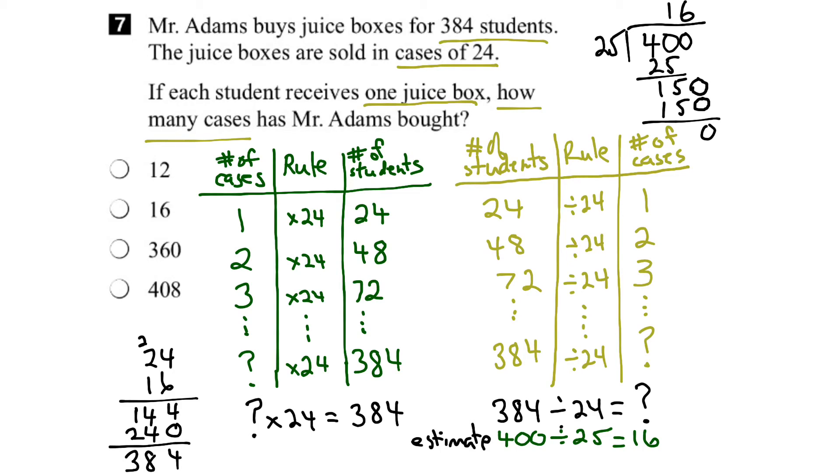So, there we go. Mr. Adams must have bought 16 cases to give 384 students one juice box each.